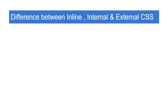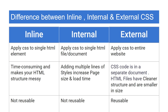Here is the difference between inline, internal, and external CSS. Inline CSS applies styling to a single HTML element; internal CSS applies styling to a single HTML file or document; external CSS applies styling to the entire website. Adding inline CSS is time-consuming and makes your HTML structure messy. Internal CSS requires writing multiple lines of style, which increases page size and load time. External CSS is written in a separate document, so HTML files have a cleaner structure and smaller size. Both inline and internal CSS are not reusable, but external CSS files can be reused.